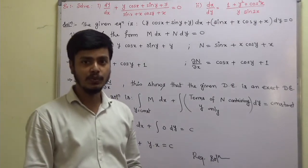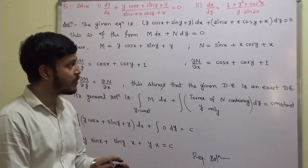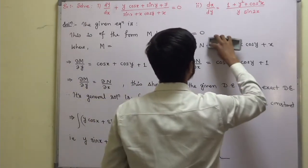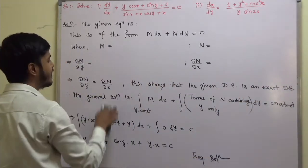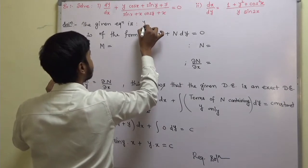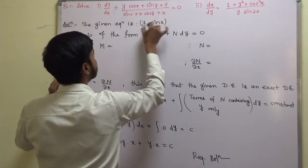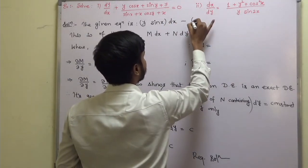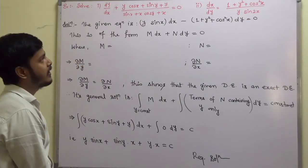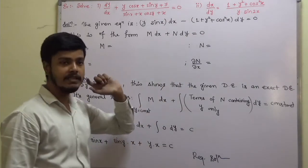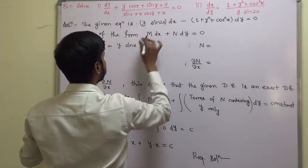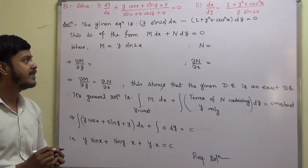I hope Problem 1 is clear. Now the second problem is a different variety. The given equation written in the form M dx + N dy = 0 gives: M = y sin 2x and N = −1 − y² − cos²x. Now find ∂M/∂y: sin 2x is constant with respect to y, so ∂M/∂y = sin 2x. For ∂N/∂x: derivative of −1 is 0, derivative of −y² with respect to x is 0, and derivative of −cos²x is −2 cos x · (−sin x) = 2 sin x cos x.